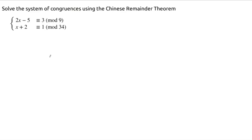We want to solve another system of linear congruences using the Chinese remainder theorem. In this one, the congruences are not given to us in a form that looks like the Chinese remainder theorem, so the first thing we need to do is rewrite each of these.